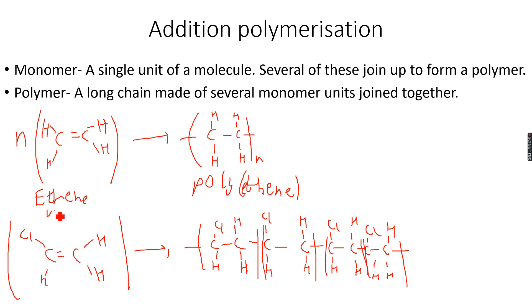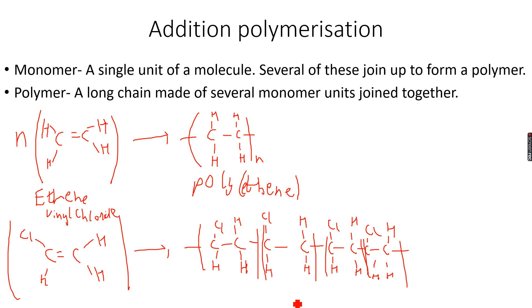This monomer is called vinyl chloride, or chloroethene, and the polymer is polyvinyl chloride, famously known as PVC. Polyvinyl chloride is used in pipes.